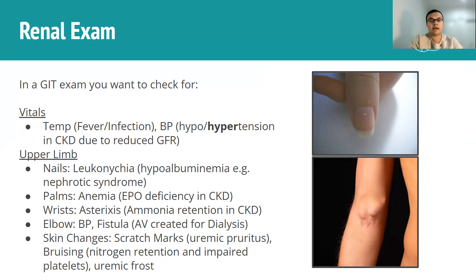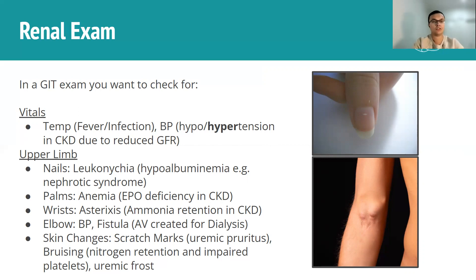In terms of skin changes, you can look for scratch marks — something you'd have covered in the context of jaundice, but also here because when you have uremia or retention of urea, you can end up with itchiness, called uremic pruritus. You can also have bruising because nitrogen retention messes up the platelets and the way they clot, leading to easy bruising. The final sign — not very high yield as it's rarely seen in clinical practice — is uremic frost, where a large buildup of urea actually precipitates onto the skin forming a frost-like layer, a sign of severe uremia.